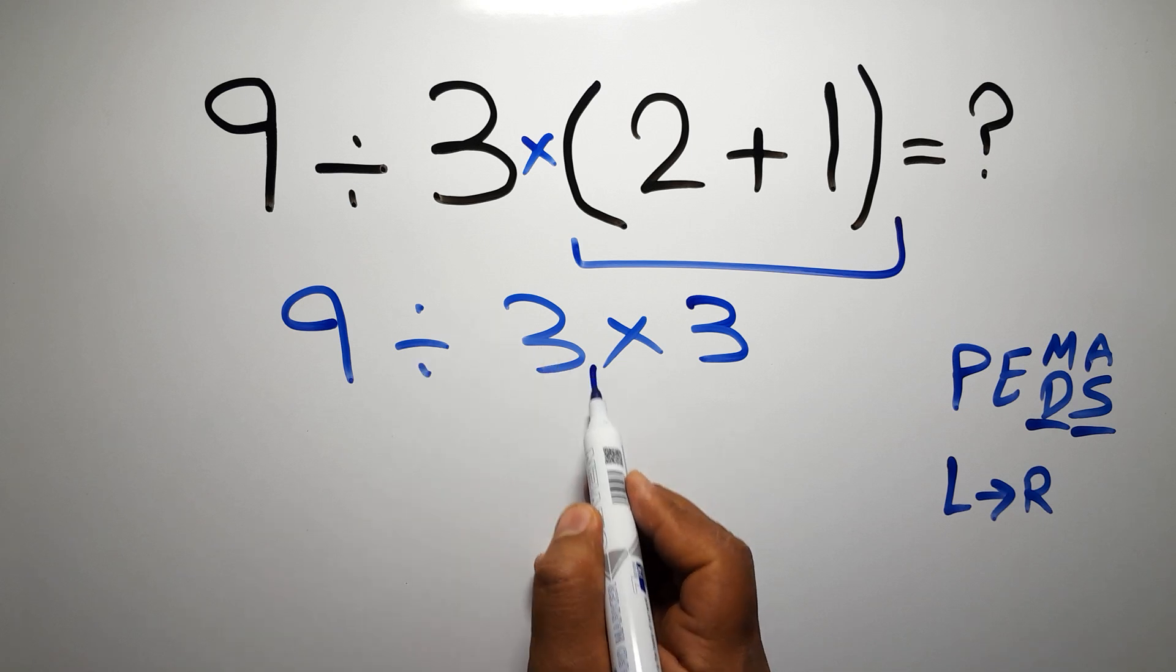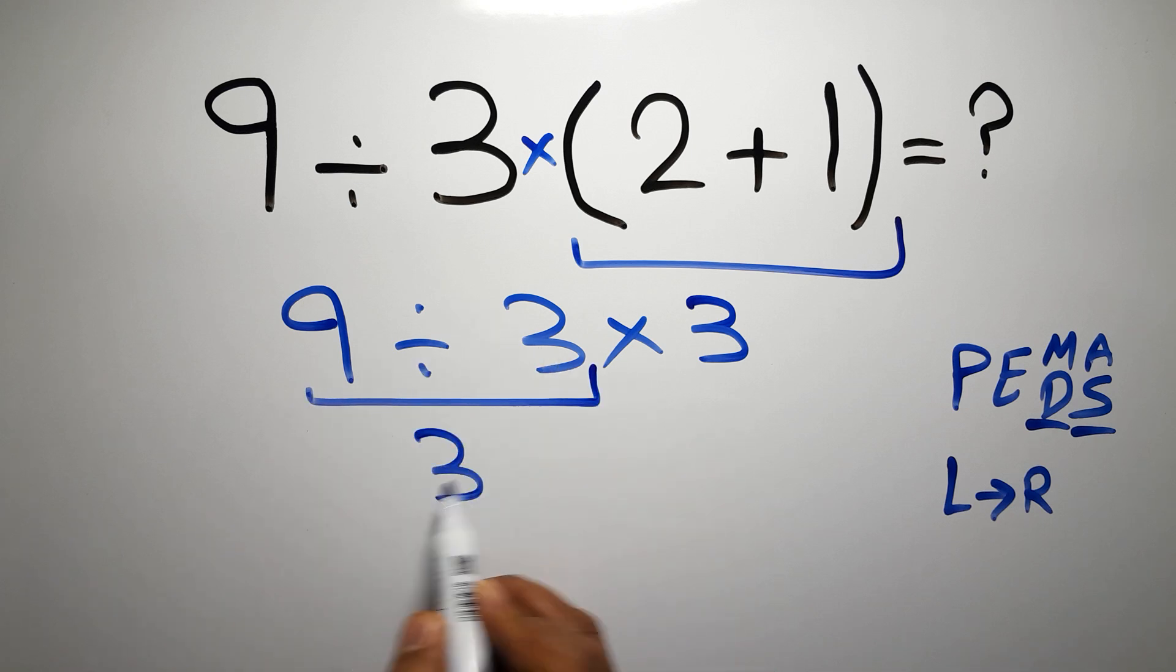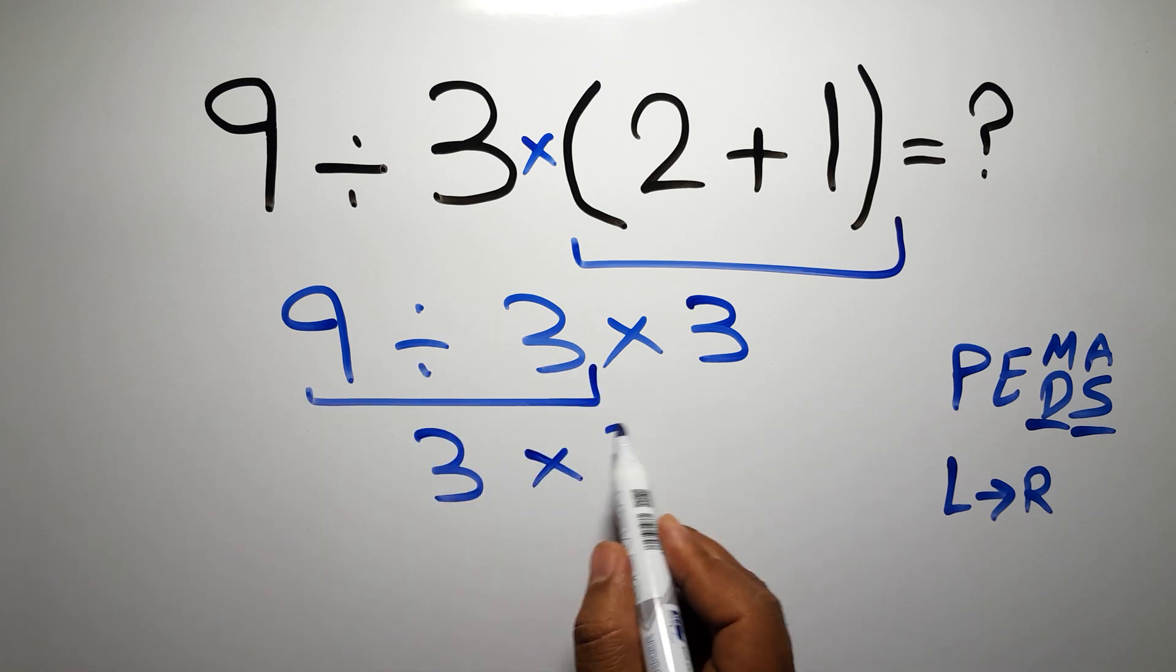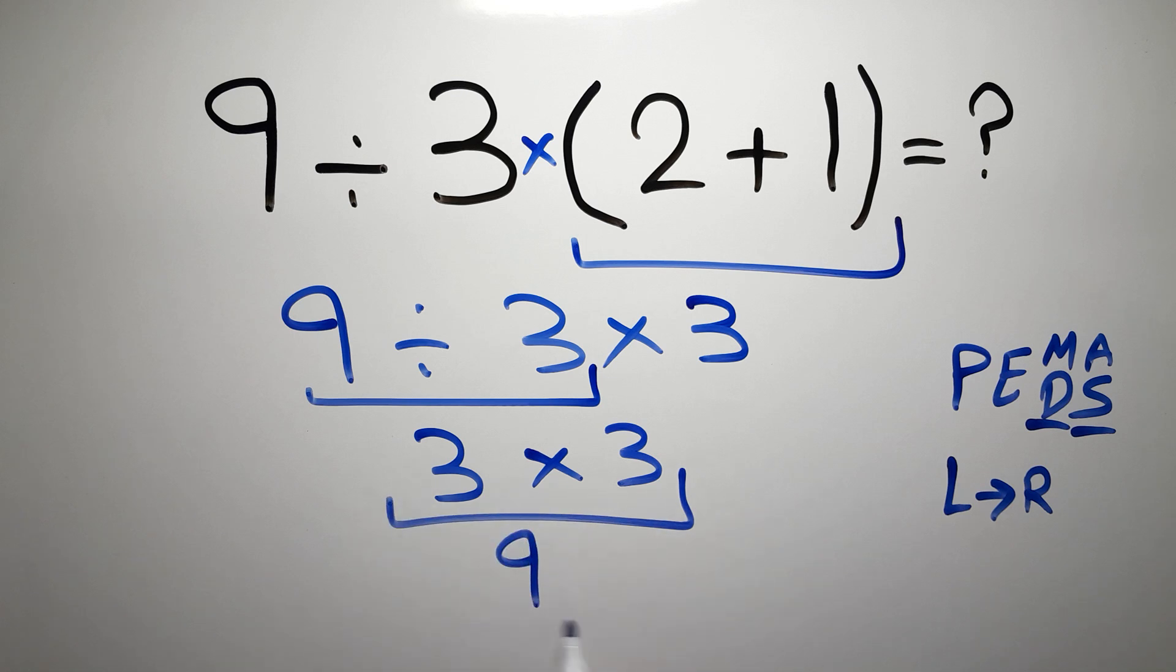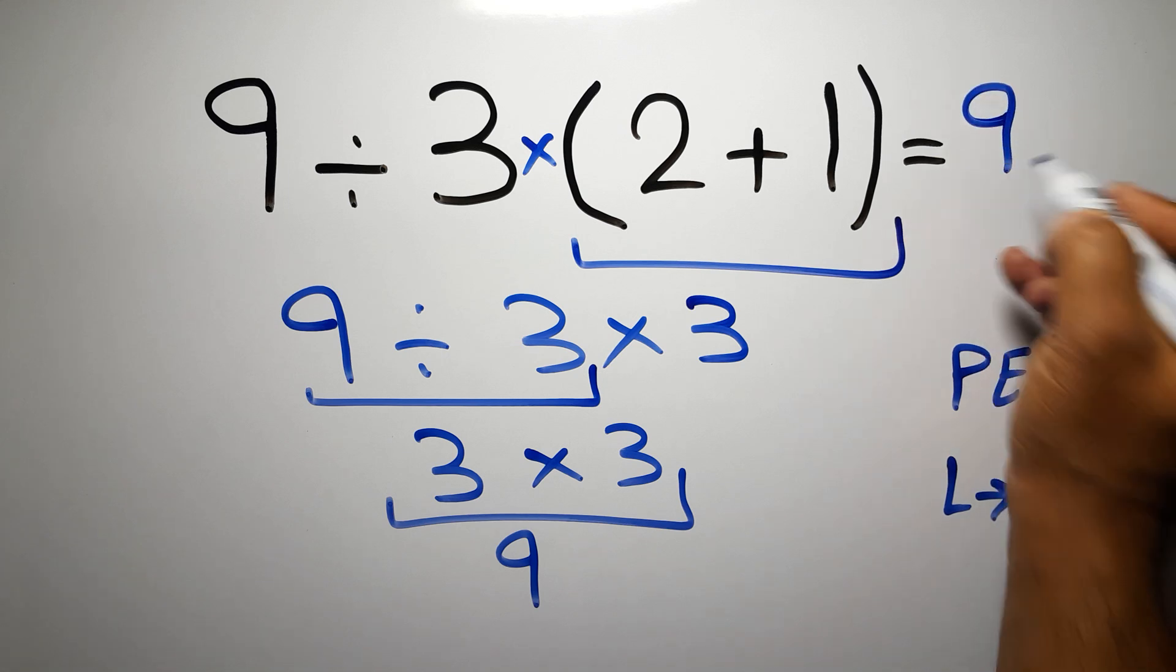9 divided by 3 gives us 3, and 3 times 3 is just 9, and this is our final answer to this problem. The correct answer is 9.